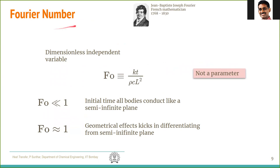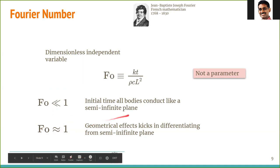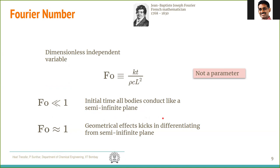The next number is the Fourier number. Unlike the previous numbers, it is neither a parameter nor a dependent variable but an independent dimensionless variable. It is defined as kT/(ρcL²) = αt/L². For very small Fourier number, all bodies conduct as though they are a semi-infinite plane; only when the Fourier number becomes order one do the geometrical effects of the shape become important and the solution deviates from the semi-infinite plane result.